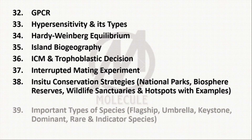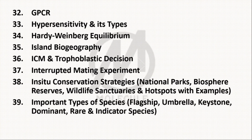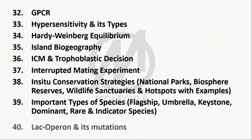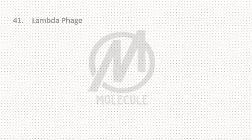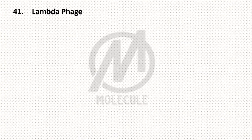Topic 39: Important Types of Species — Flagship, Umbrella, Keystone, Dominant, Rare, and Indicator Species. Topic 40: Lac Operon and Its Mutations. Topic 41: Lambda Phage.